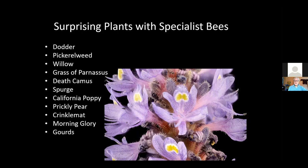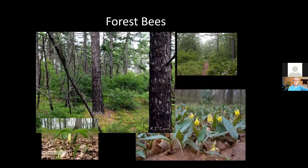Pickerel weed, willow, grass of Parnassus — you can read down that list — have bees that only go to them. It's a fascinating world and they can show up in your garden. Forests are harbors of many different kinds of native plants and also harbor many specialist systems. Things like Uvularia down in the left-hand corner has its own bee, relatively little collected but around — it was described from Beltsville.